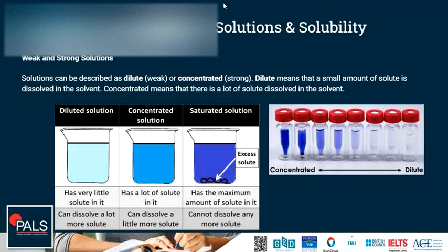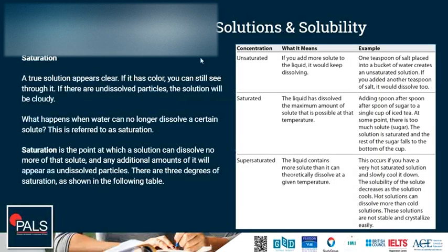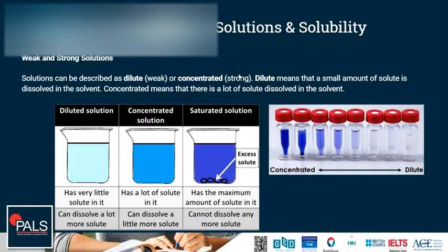Weak and strong solutions: solutions can be described as dilute or concentrated. Dilute means a small amount of solute is dissolved in the solvent; concentrated means there is a lot of solute dissolved. Both are usually unsaturated. A dilute solution has very little solute and can dissolve a lot more, while a concentrated solution has a lot of solute and can only dissolve a little more before reaching saturation. If that saturated solution is cooled down, it becomes supersaturated and the solute will eventually start to crystallize.